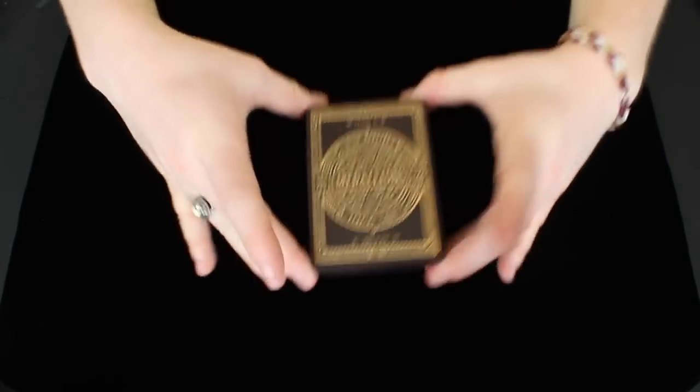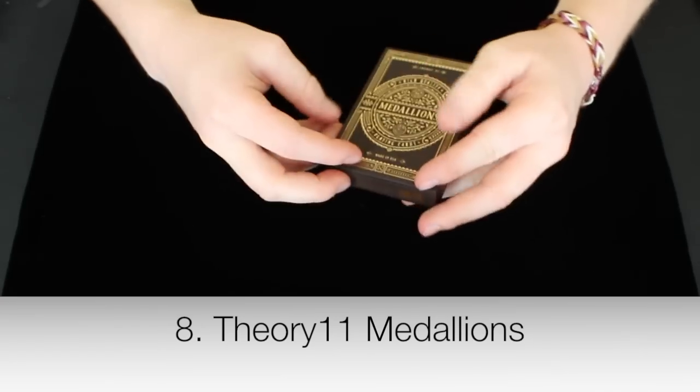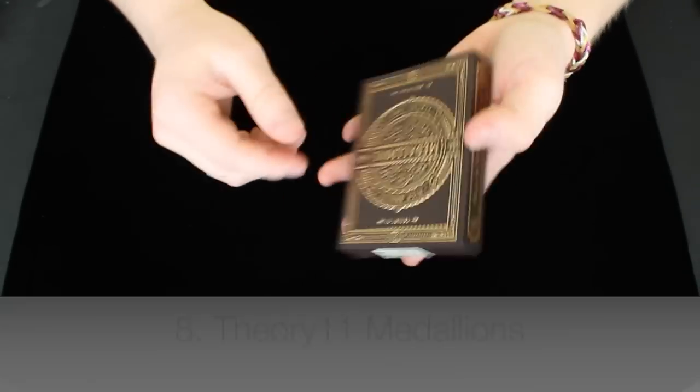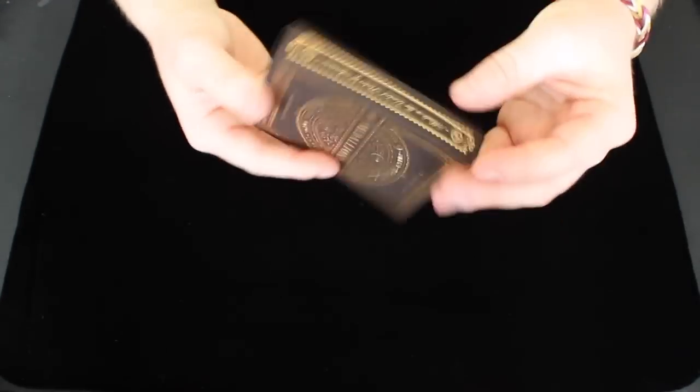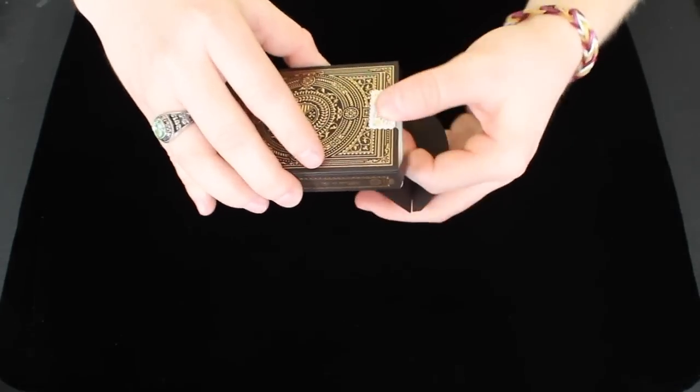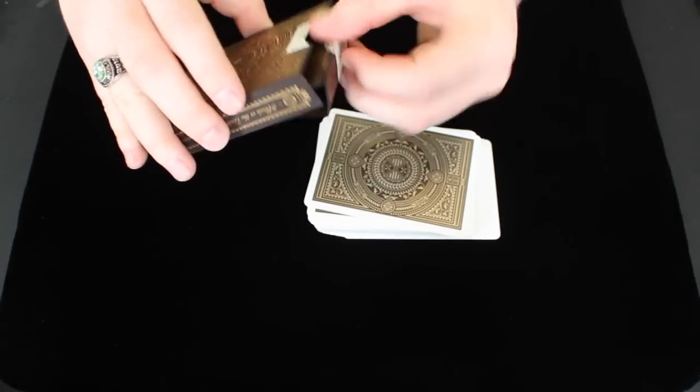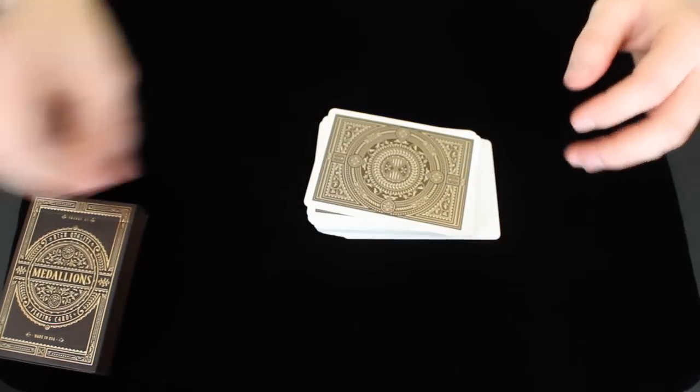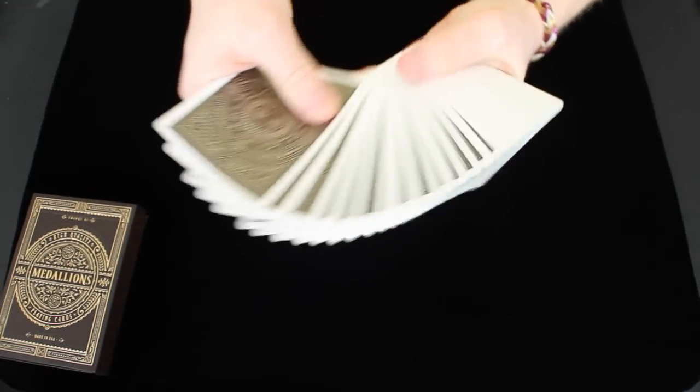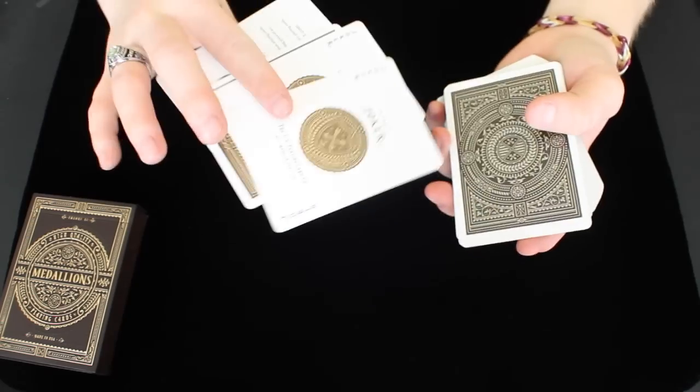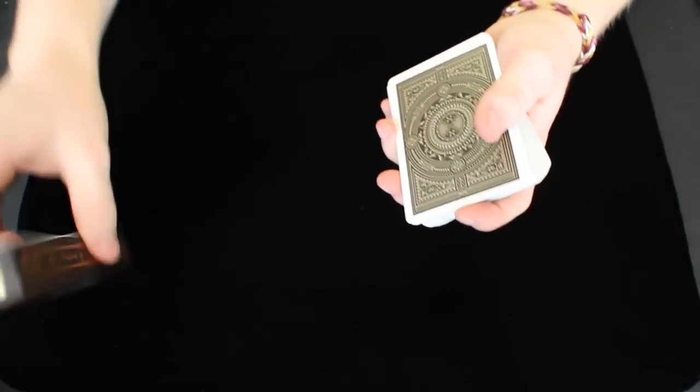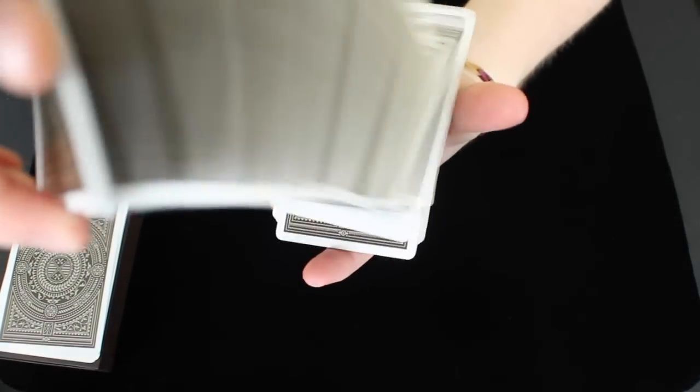At number 8 we have the Medallions from Theory 11. This is a very intricately made deck and it has that super luxe matte paper as a tuck box which makes it feel super elegant. And the cards themselves are just...these are beautiful looking cards. I think the tuck box looks absolutely fantastic and the paper on it is awesome. But the overall design of this deck from the back design to the Jokers to everything. It's very well done. Very well thought out.